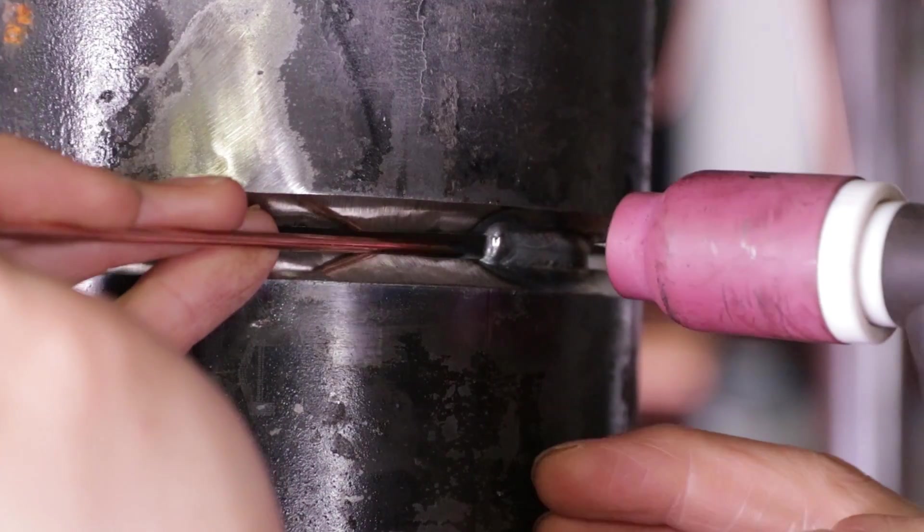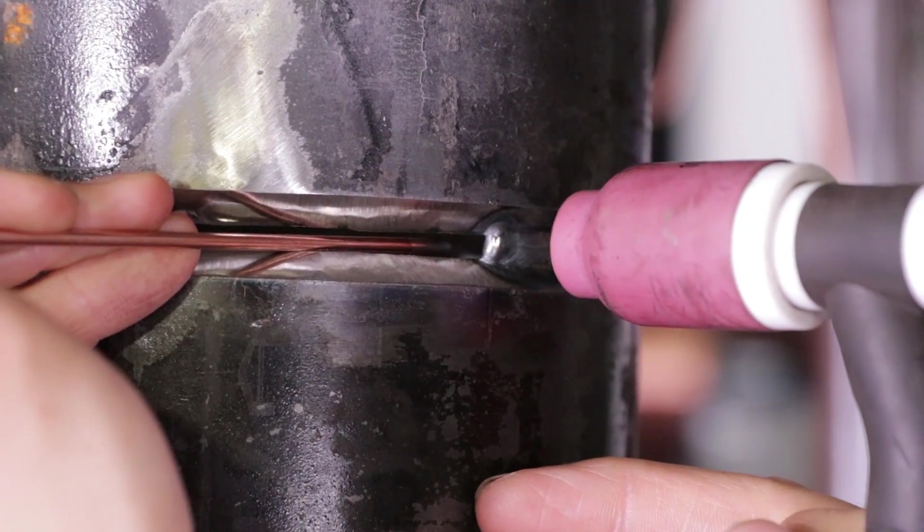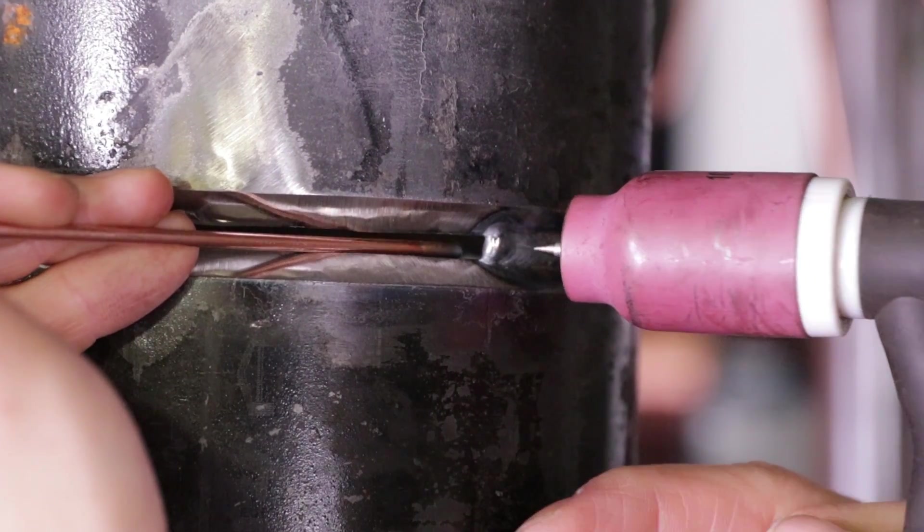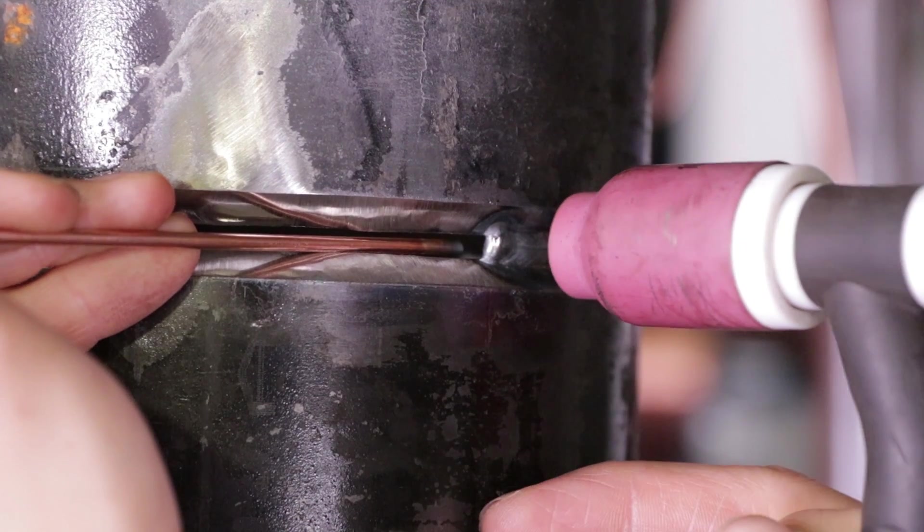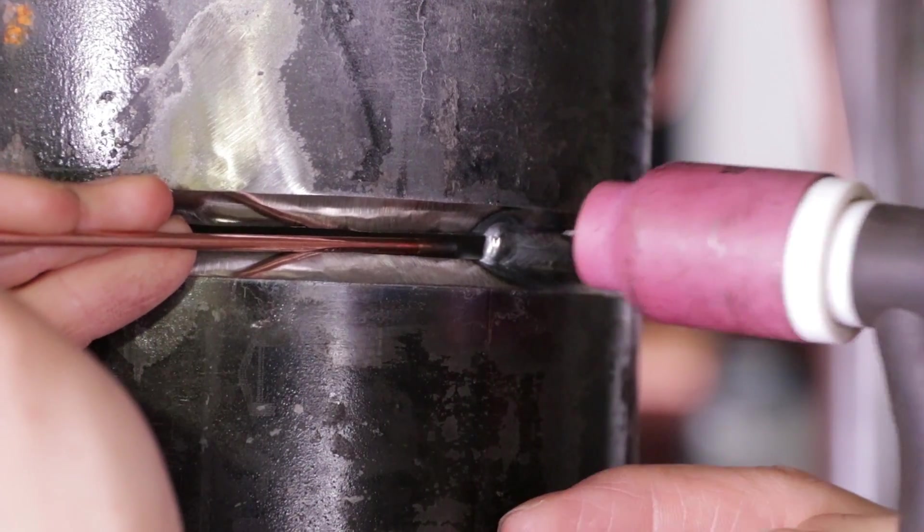Another thing you want to make sure is that you keep your torch perpendicular to the pipe, like this. You can get away with it being a little slanted, but the best way to do it is keeping it perpendicular with it. And this goes for 5G and 6G.